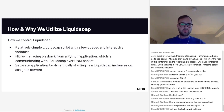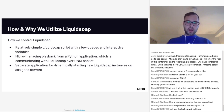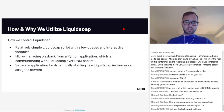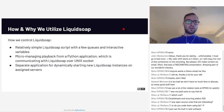So how do we control Liquid Soap? It is a relatively simple Liquid Soap script with a few queues and interactive variables. We are micromanaging the playback from a Python application, which is communicating with Liquid Soap over Unix sockets, and a separate application dynamically starts new Liquid Soap instances on assigned servers. So as a new user comes into the platform and signs up for a radio station, they're automatically assigned to one of the servers in our Liquid Soap pool.